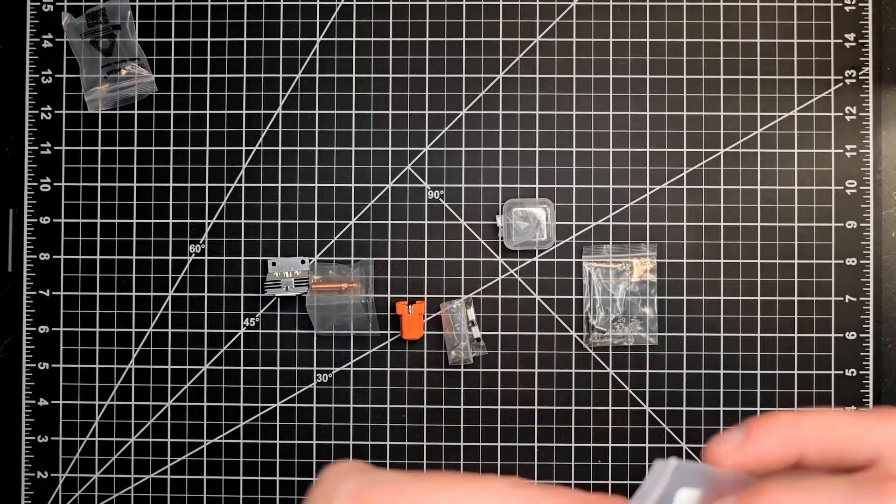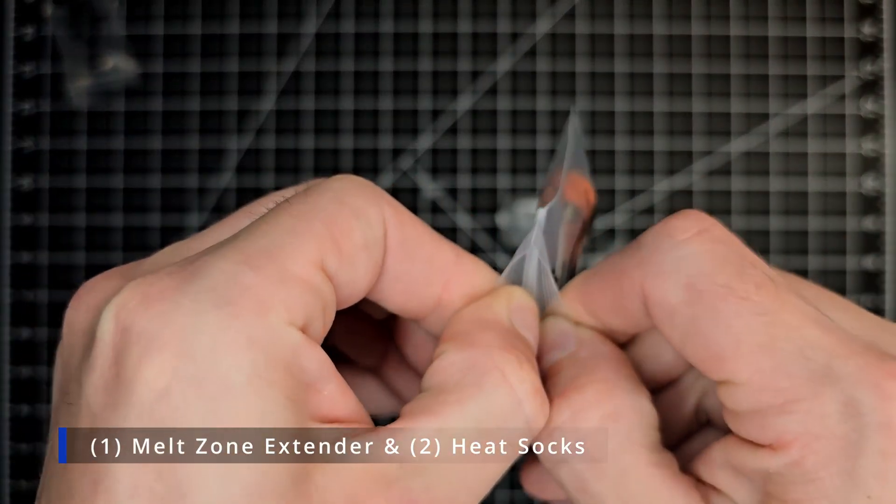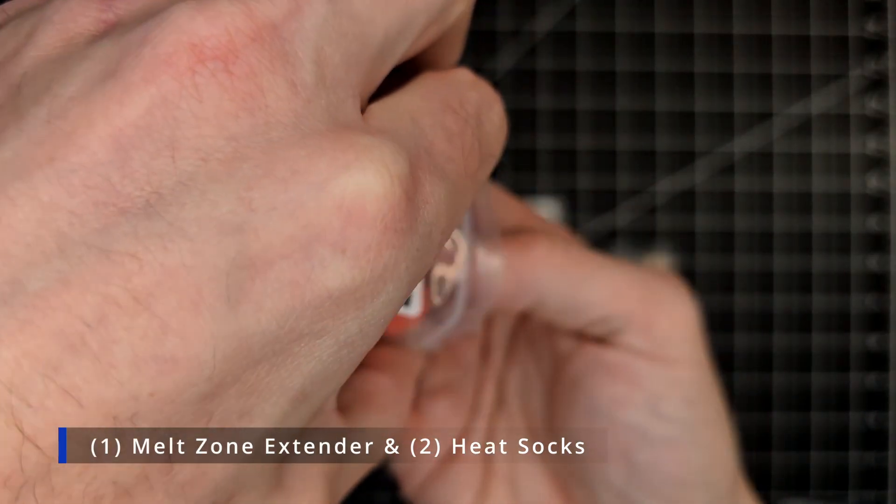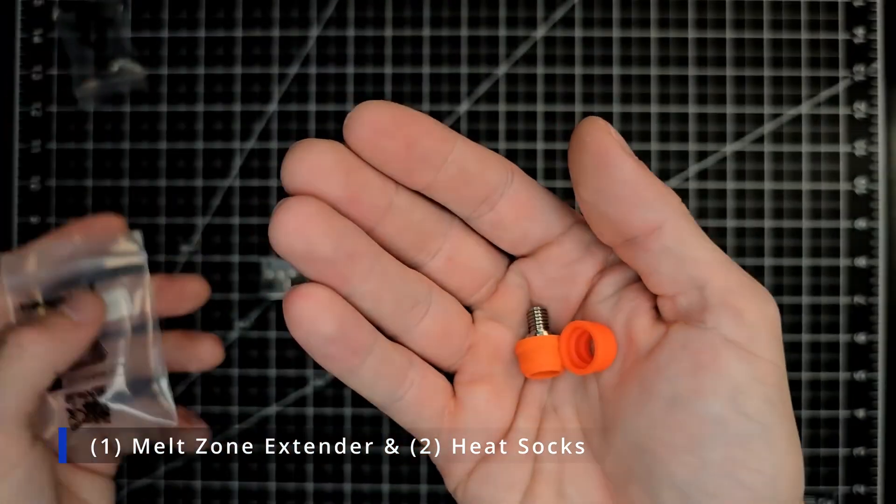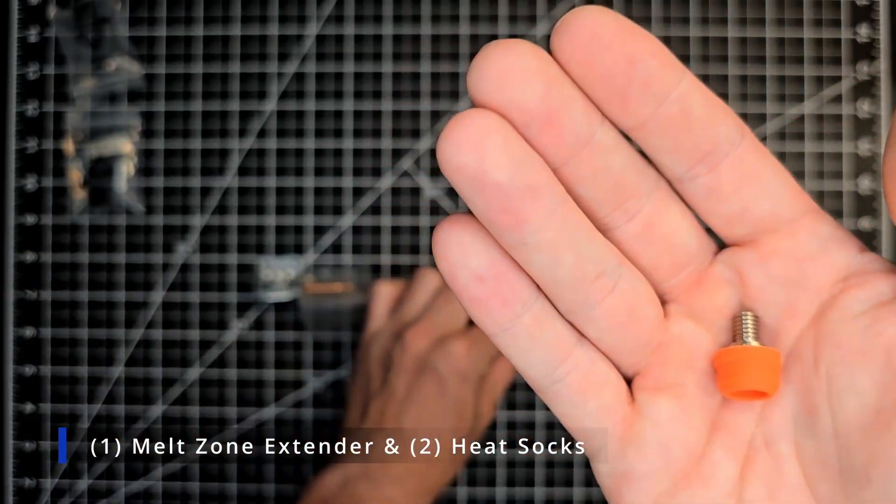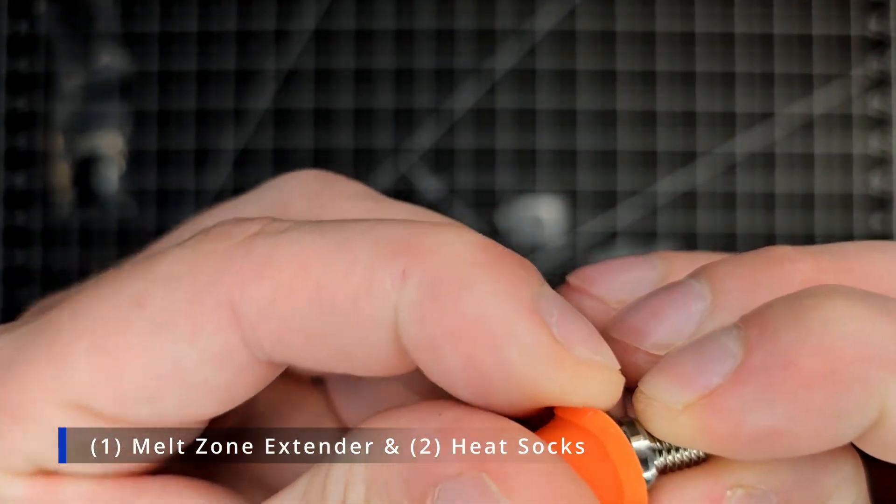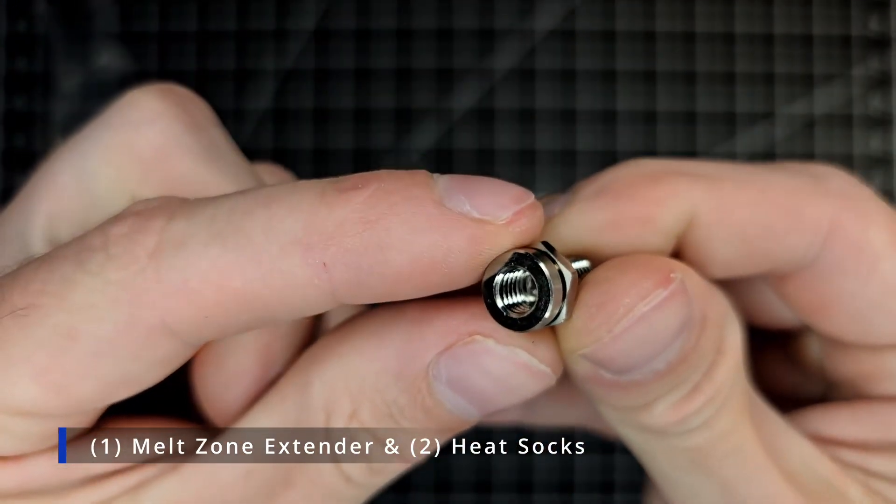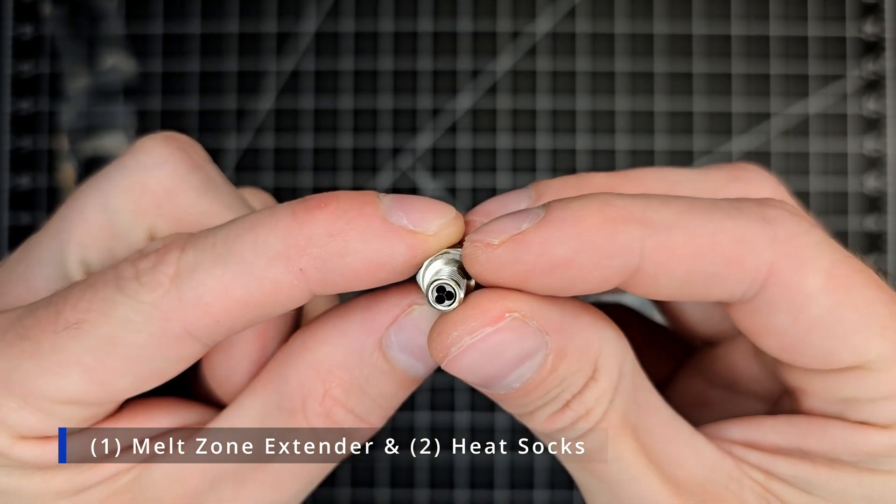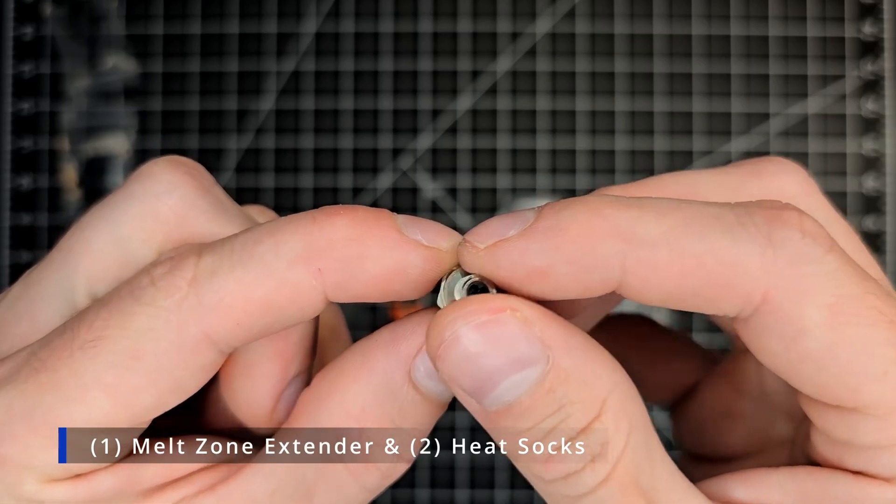In this next bag we will find the Melt Zone Extender with 2 socks in case one gets damaged at whatever point. Now this Melt Zone Extender is going to be assisting in achieving that max volumetric flow near double of what you're receiving out of your current hot end. It does have 3 ports within it and that maximizes the flow going through it, as well as increasing the Melt Zone.